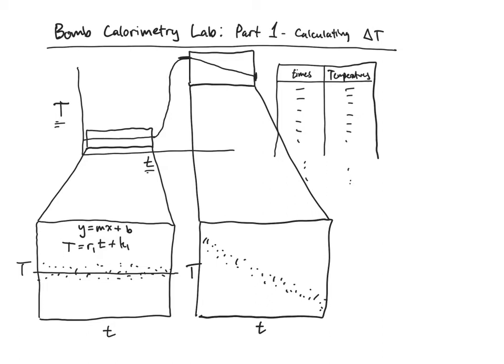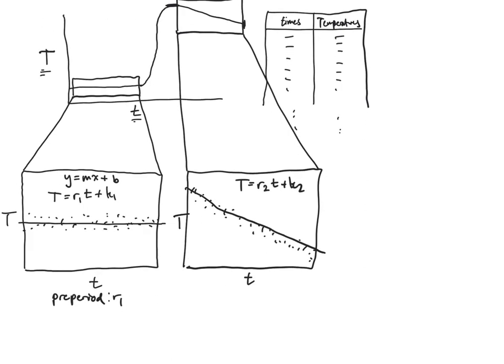And you're going to create another trend line like this and you're going to get a T equals r2 times little t plus k2. This is going to represent the slope of the pre-period, that's r1, and then r2 is going to represent the slope of the post period.